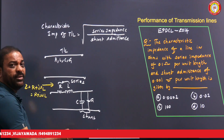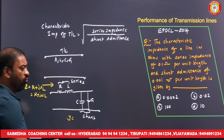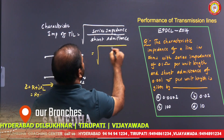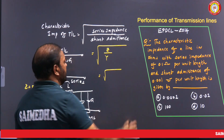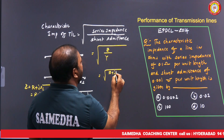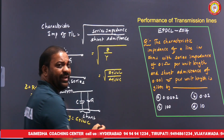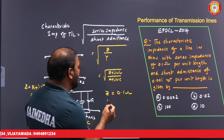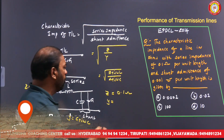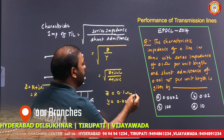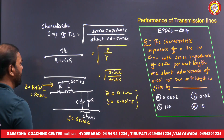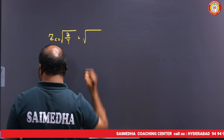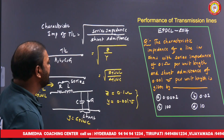The series impedance is Z = R + jωL per unit length. The characteristic impedance of a transmission line is given by Z_c = √(Z/Y), where Z is the series impedance and Y is the shunt admittance. Here Z = 0.1 ohm and Y = 0.001 ohm per unit length.